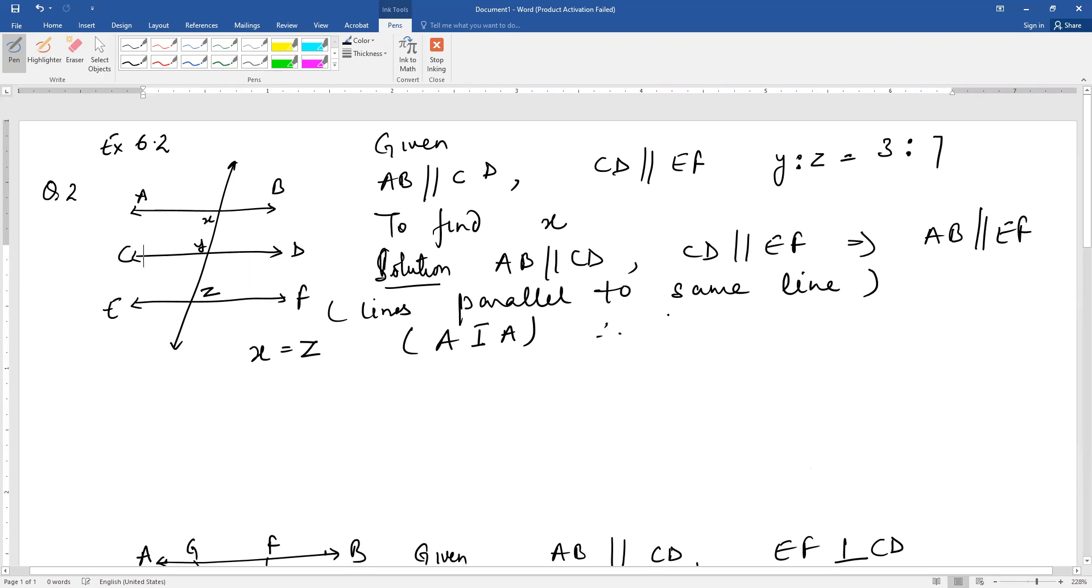Therefore, the ratio y to z can be written as y to x, which is equal to 3 to 7.